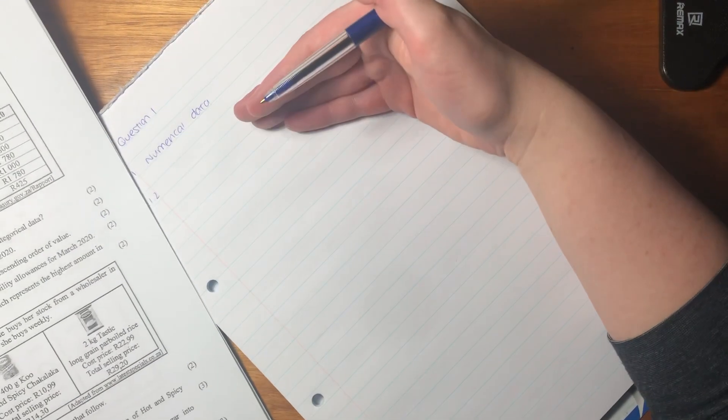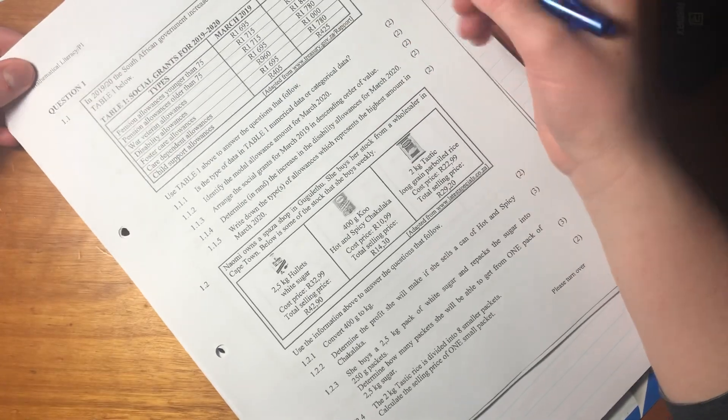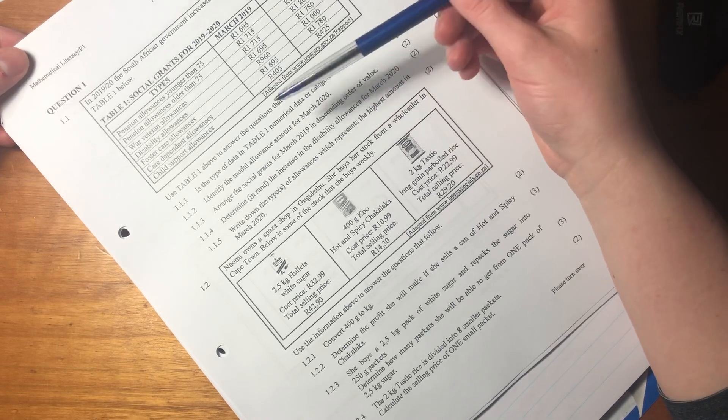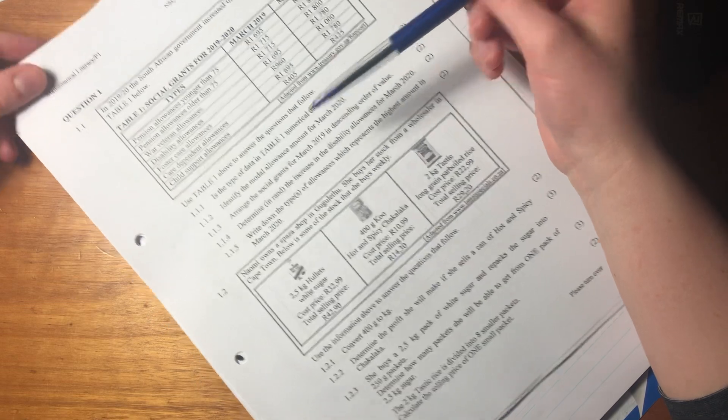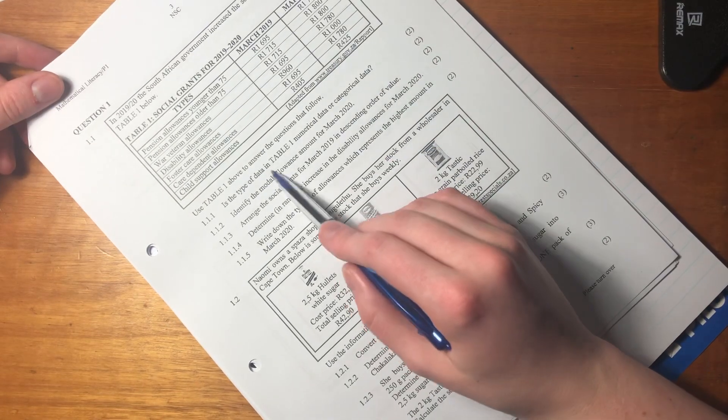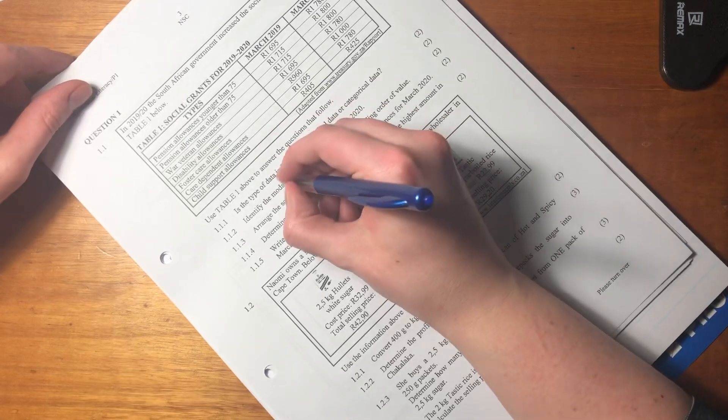Remember to leave a line between your questions; it makes it easier for the marker to see where different answers are but also leaves space for you to possibly add something. Let's look at the second question. It says identify the modal allowance amount for March 2020.